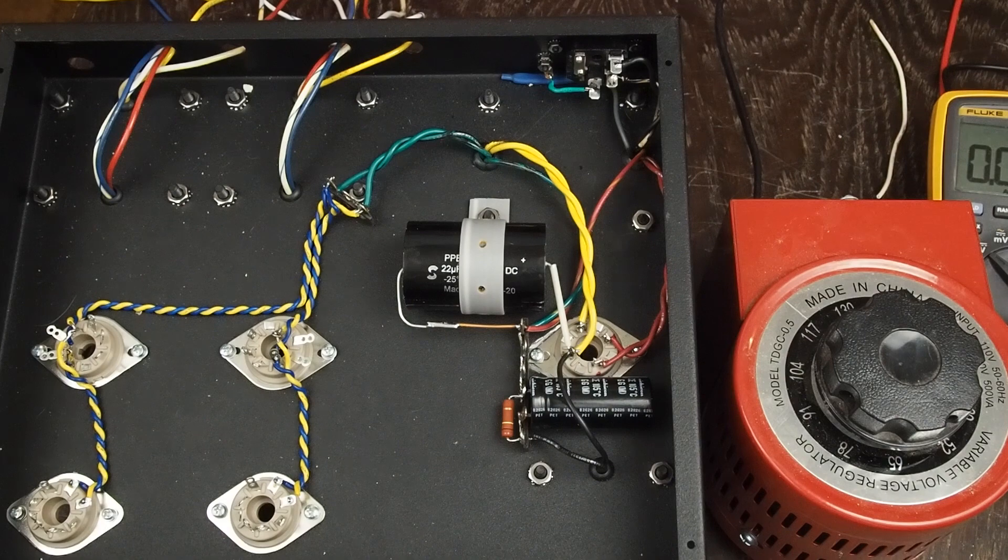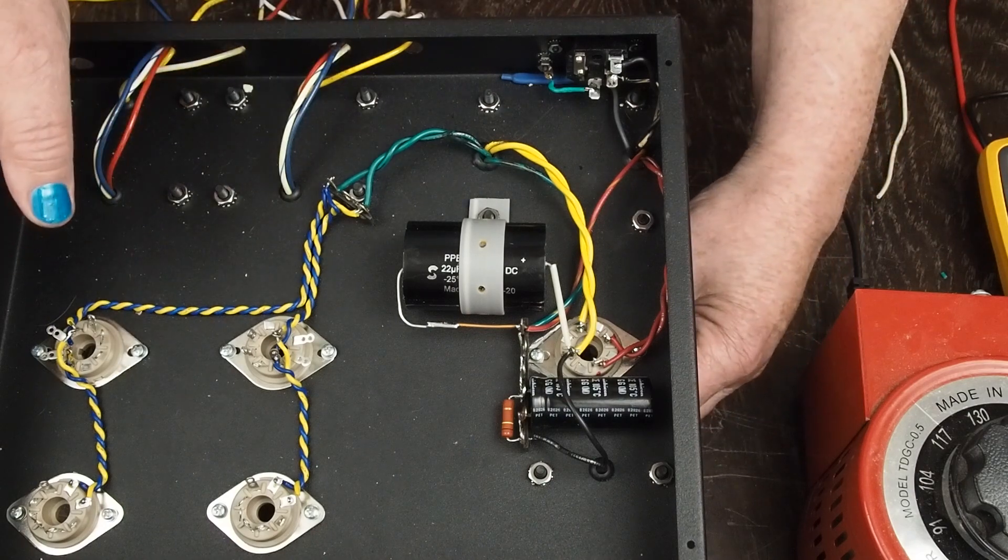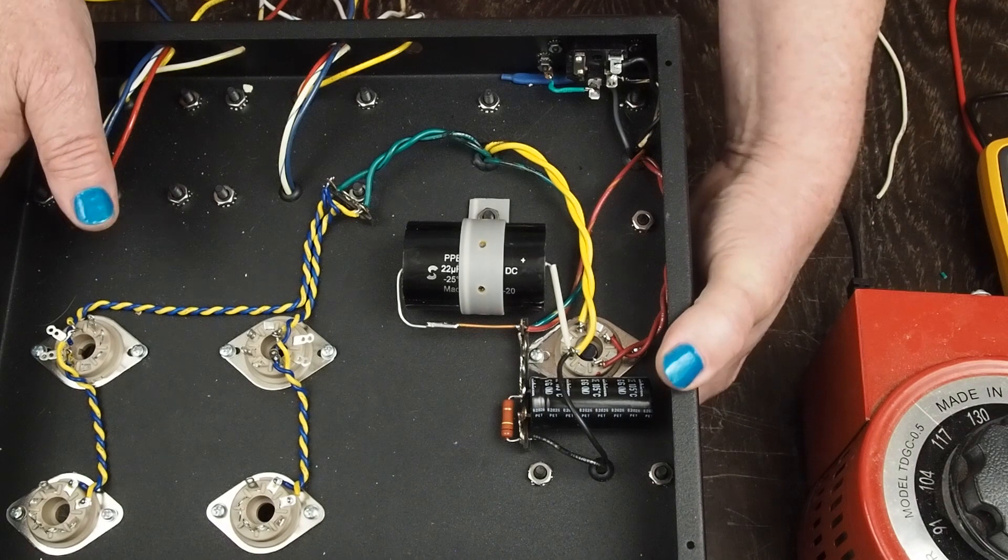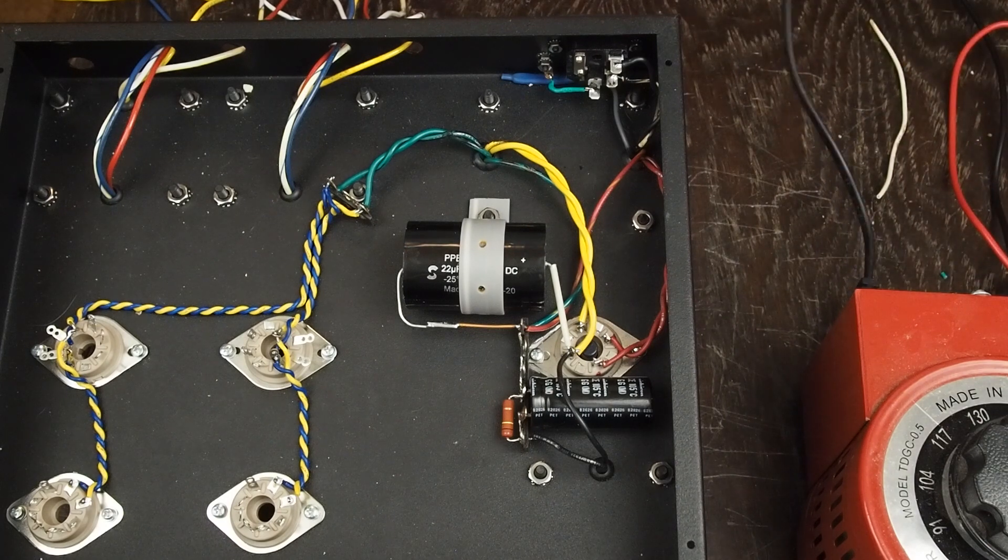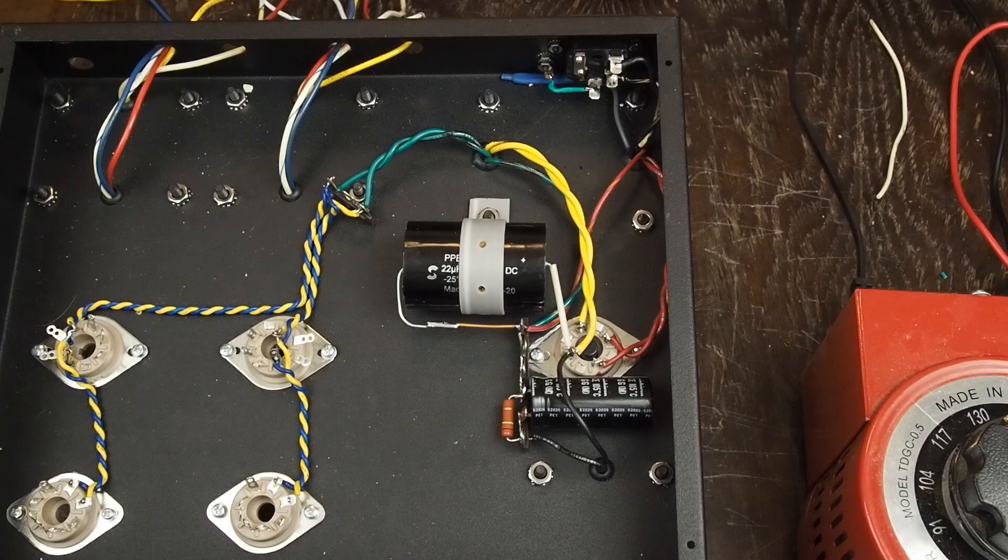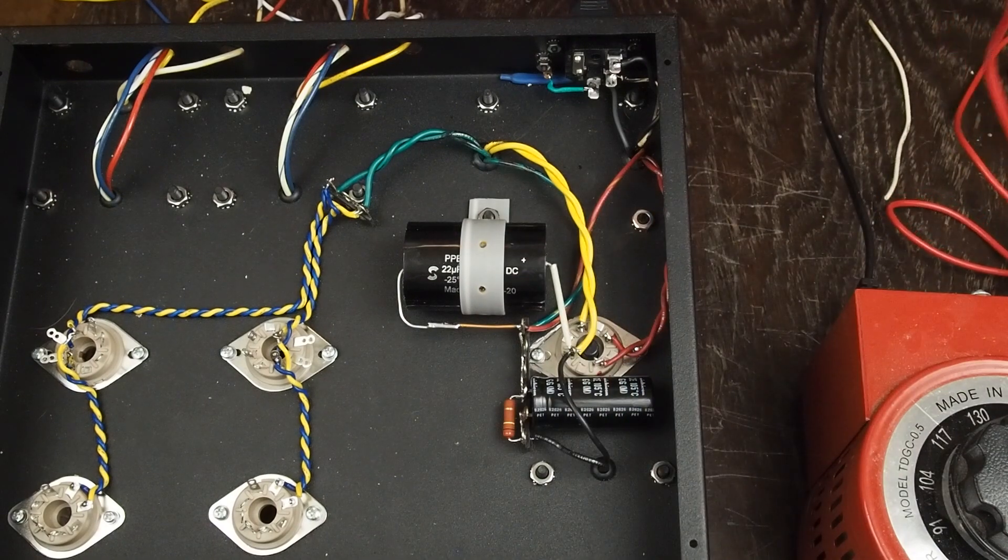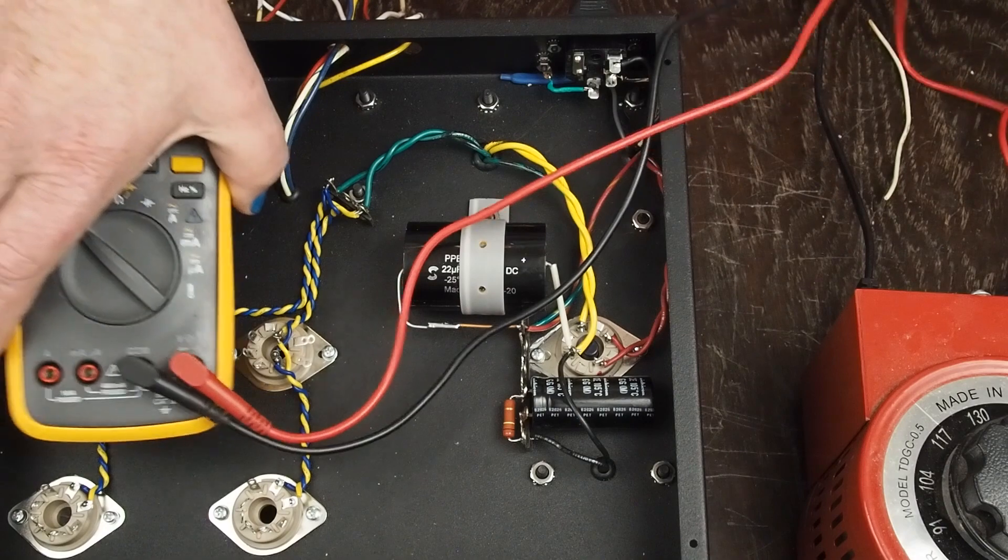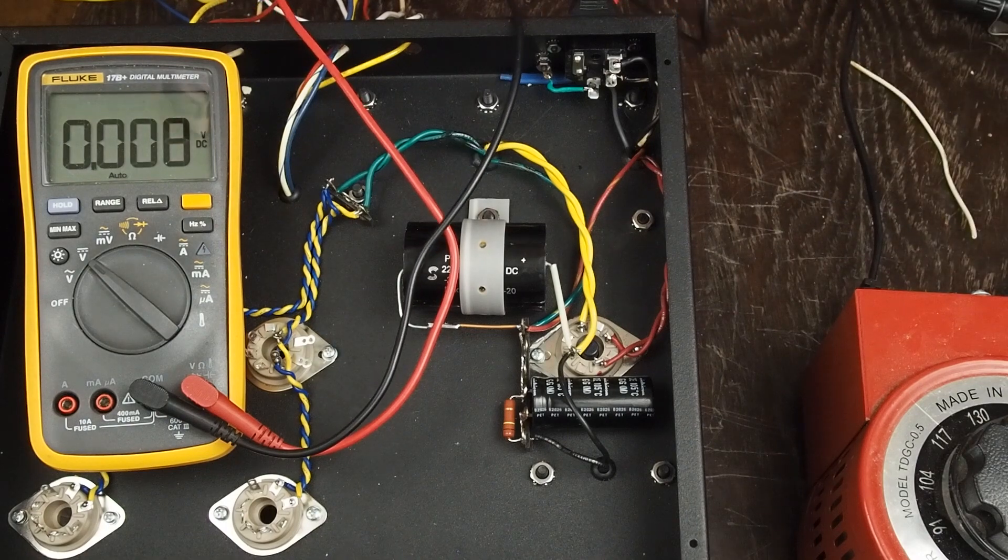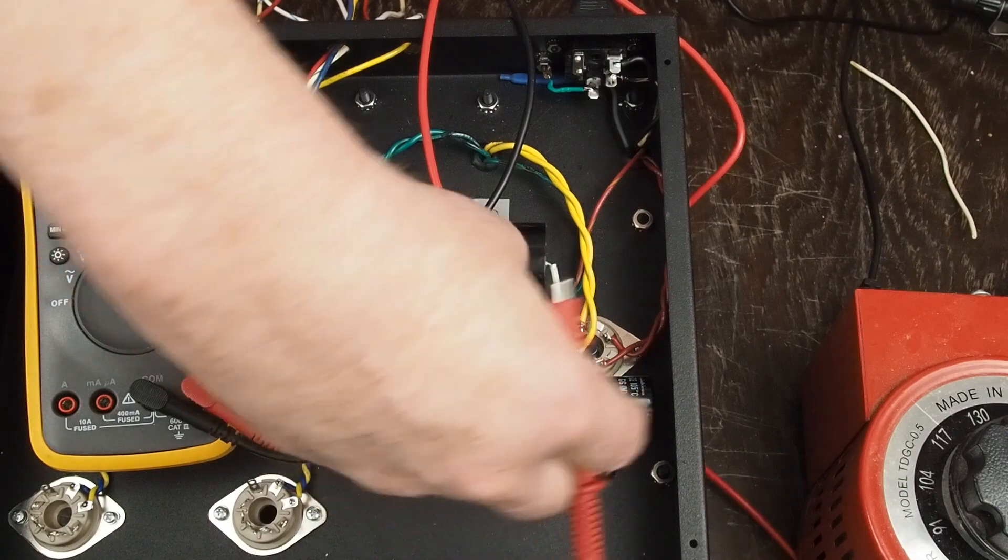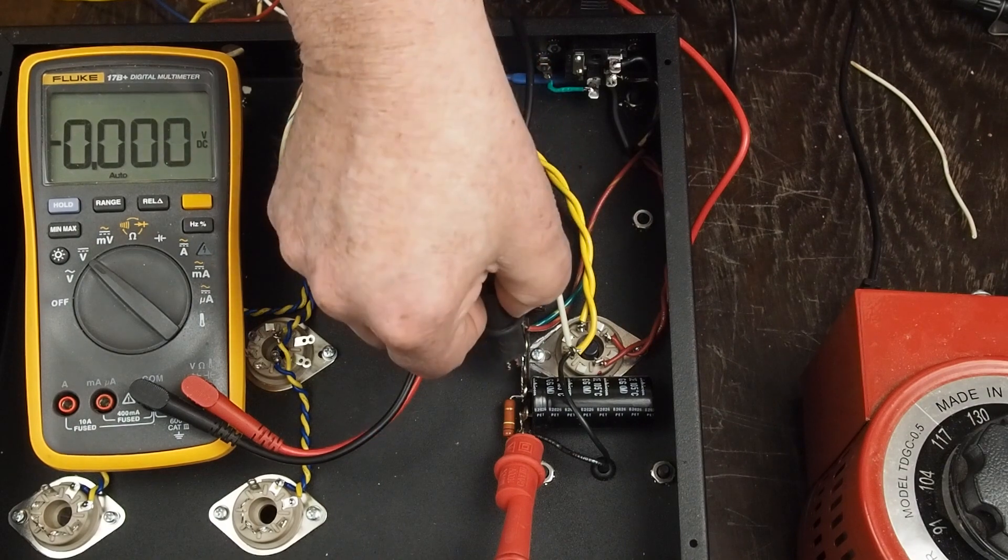That's an easy thing to do, so I'm going to pop in the rectifier tube. And this time we're going to have DC on the B+ rail.